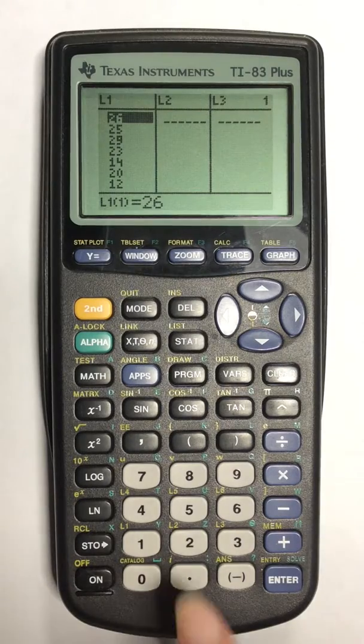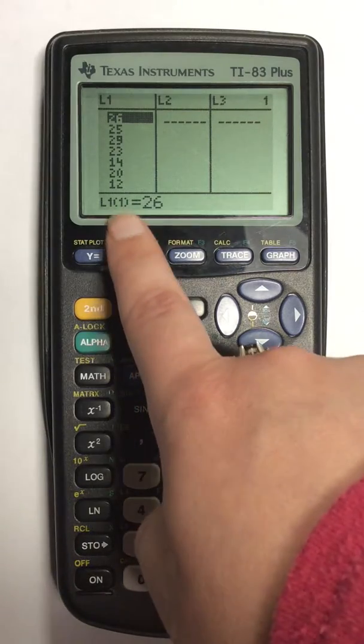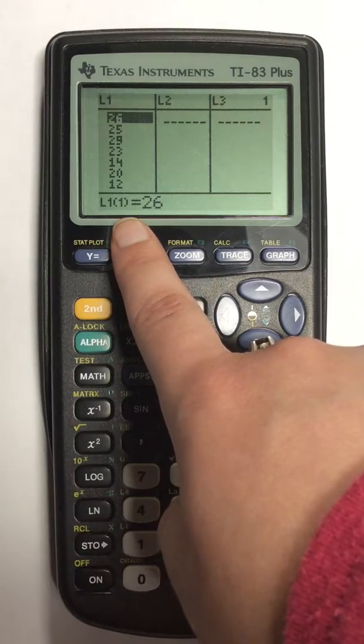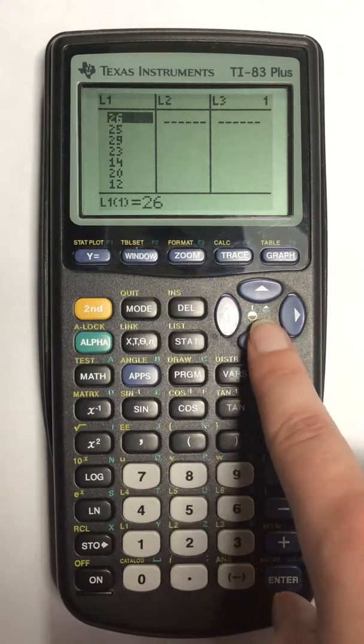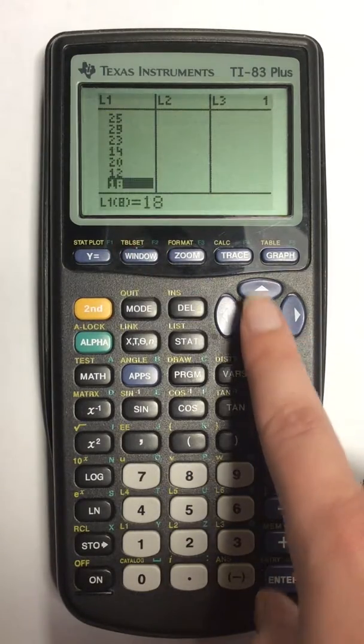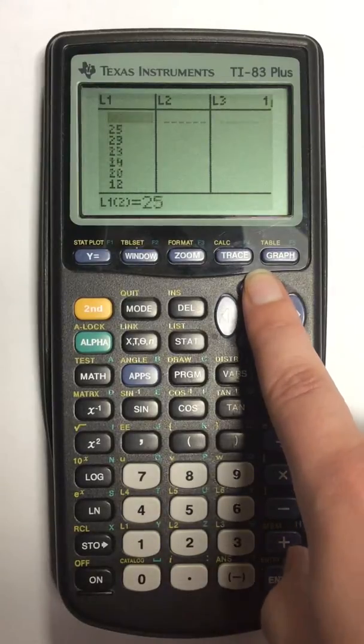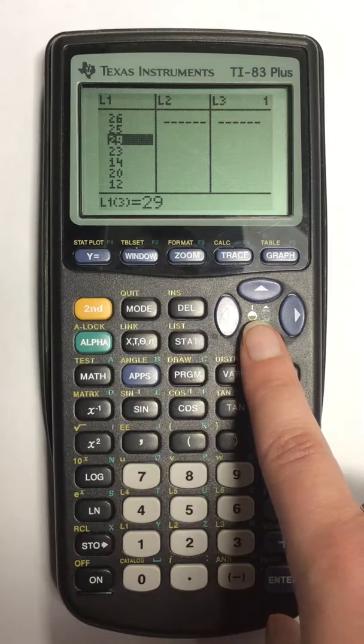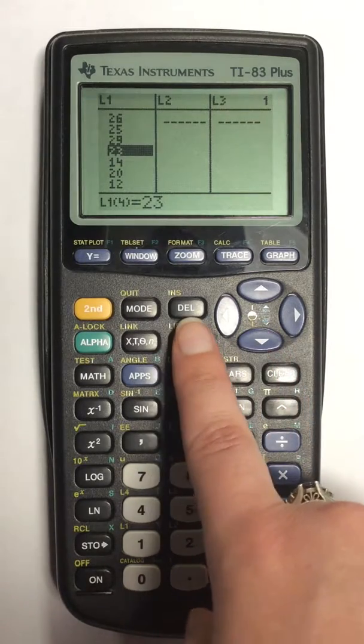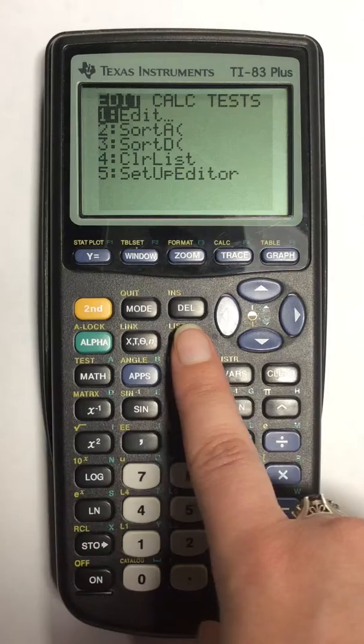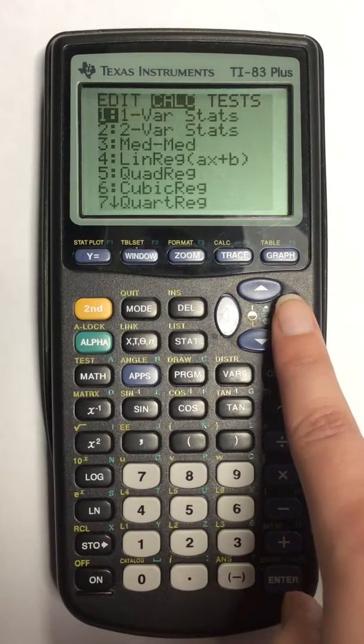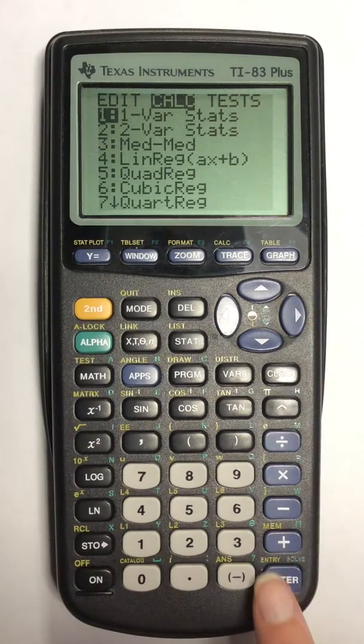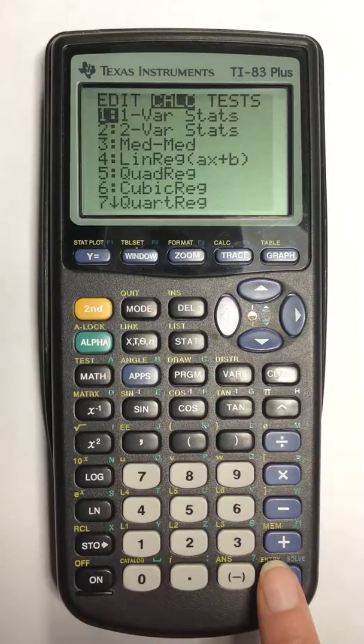I already have a list of numbers pre-programmed into my calculator and it's a pretty long list. In order to find standard deviation, start by pressing the stat button, going over to calc, and hitting enter for one variable stats.